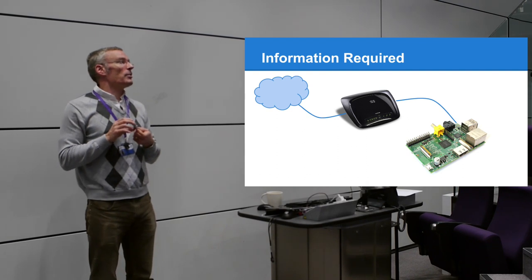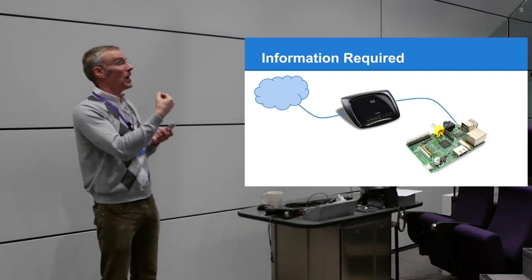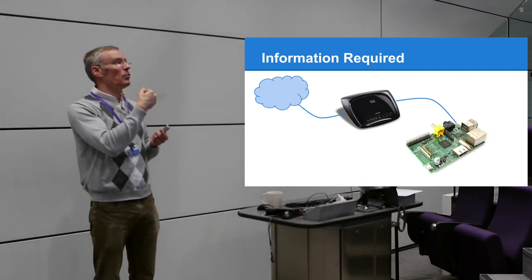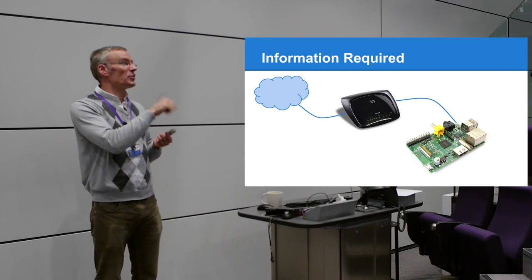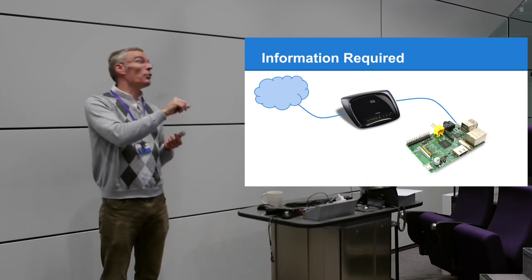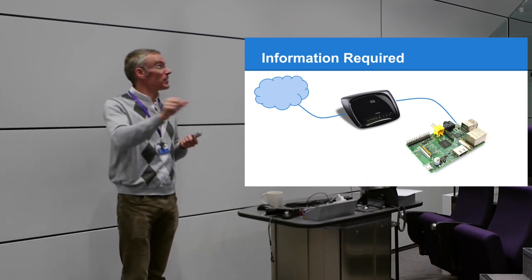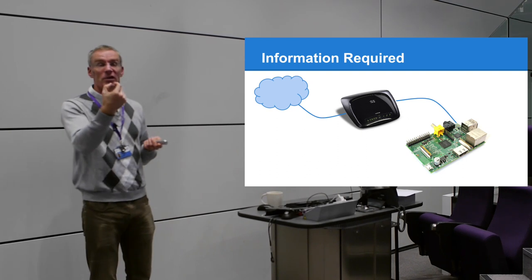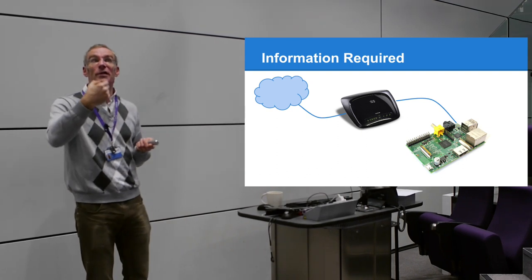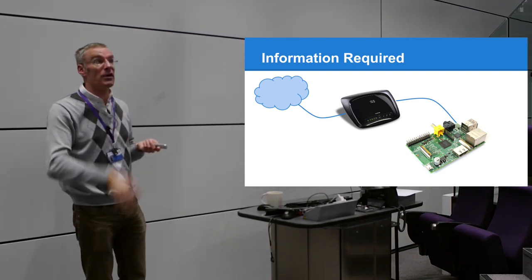I'd start with a wired network connection, but you can buy wireless dongles and put them in. There's a presentation on Moodle showing how to set up wireless. It's slightly more involved but I'll put step-by-step instructions there. There are tiny little USB Wi-Fi dongles you can plug in to go wireless.